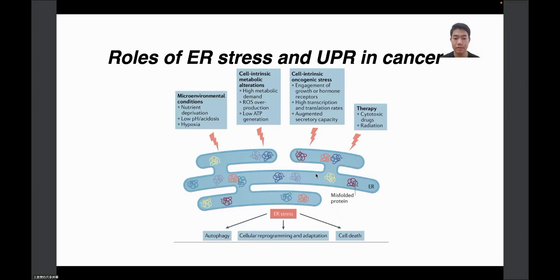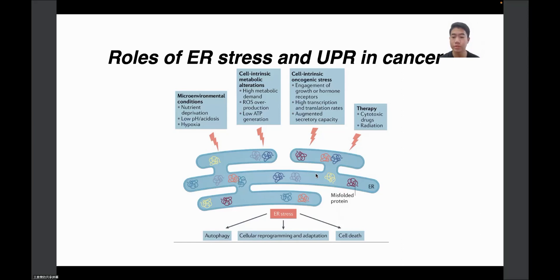Owing to the additive effects of various ER stressors concurrently enriched in the tumor microenvironment during cancer initiation, progression, and therapy, robust and persistent UPR activation is mostly evidenced in cancer cells and tumor-infiltrating immune cells in vivo, which has been challenging to recapitulate under in vitro conditions. ROS, reactive oxygen species, also play a role.